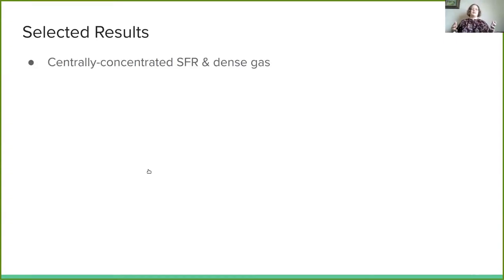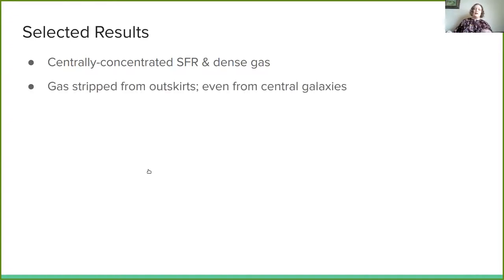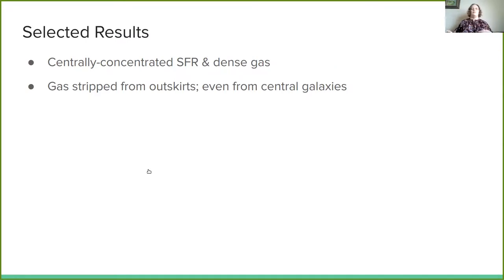First, our cut-selected galaxies had centrally concentrated star formation rate and dense gas. This high central concentration was due to gas stripping from the outskirts. This was even true for the central galaxies. It's a little bit easier to see how this might be for satellite galaxies because of things like ram pressure stripping, but we found it for both kinds.